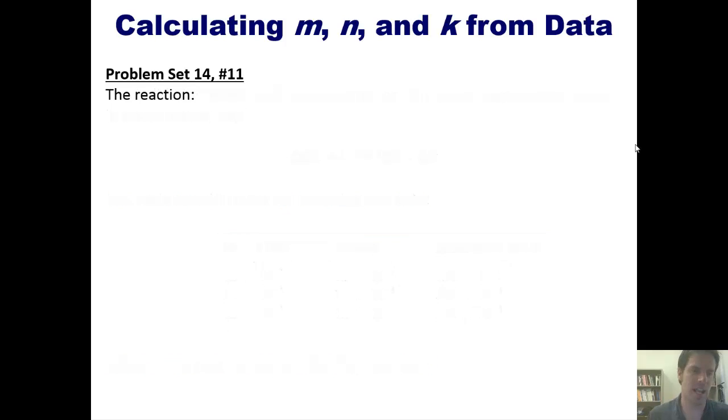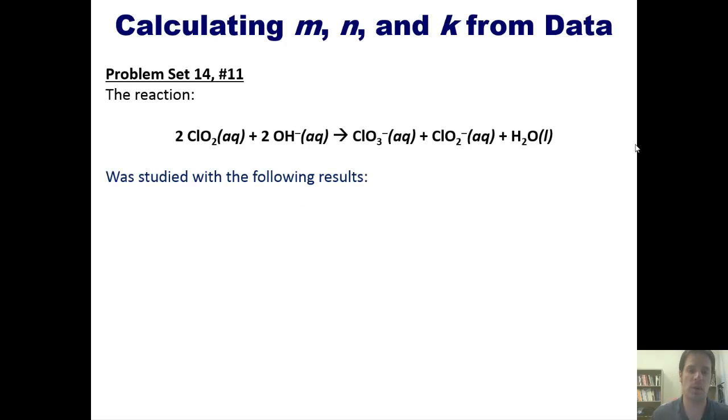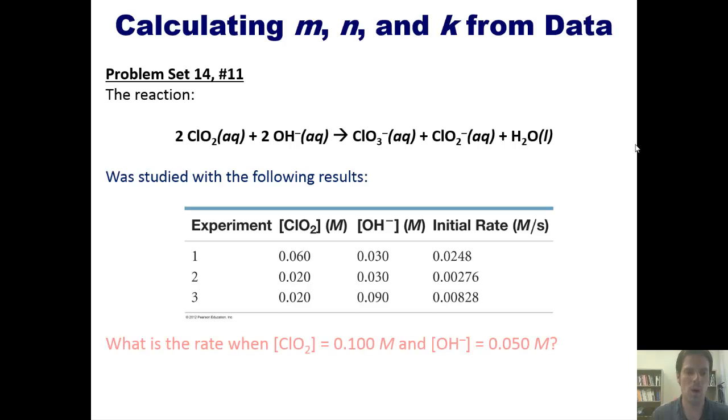Here's another exciting example. The reaction shown here was studied with the following results. What is the rate when the concentration of chlorine dioxide equals 0.100 molar and of hydroxide is 0.05 molar? You're welcome to pause and try this. You can then click this link to watch me solve it on the whiteboard.